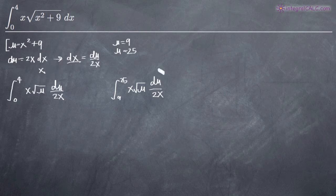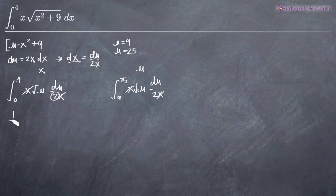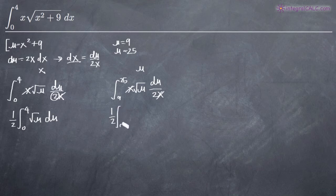So we can write those in: 9 to 25. In both cases, x is going to cancel because we've got x in the numerator and the denominator, and we can bring the 2 out in front of the integral because it's a constant. So we'll end up with 1 half times the integral from 0 to 4 of the square root of u du, and over here we'll end up with 1 half times the integral from 9 to 25 of the square root of u du.